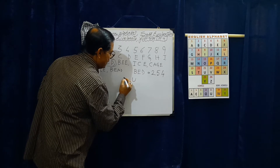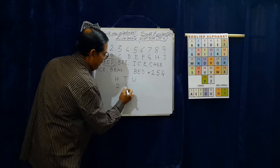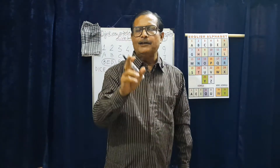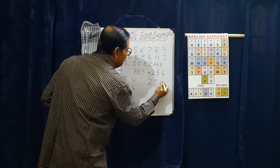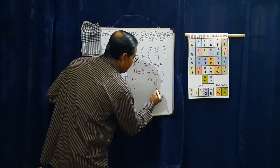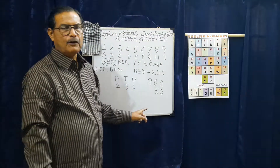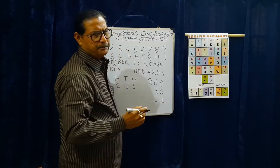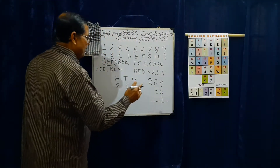This is the units place, this is the tens place, and this is the hundreds place. Let us put 2, 5, 4. The place value of 2 is 200, the place value of 5 is 50, and the place value of 4 is 4. So altogether we get 254.